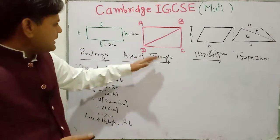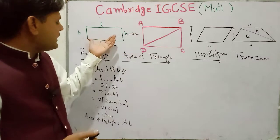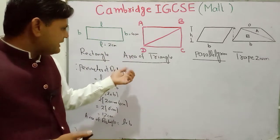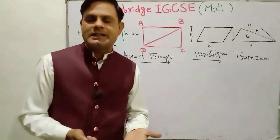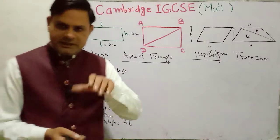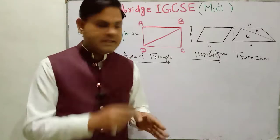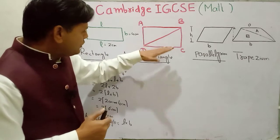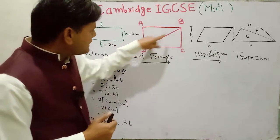Next I draw a rectangle, but here we find the area of a triangle. What is a triangle? A triangle is a closed shape with three vertices. If you look here at this type of shape...